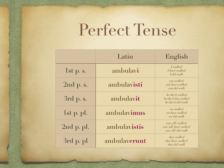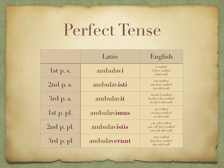The perfect tense ends in -i-isti-it, -imus-istis-erunt. Sometimes there's a consonant like a v in the stem, but not always. Remember to translate this as a completed or one-off action. So ambulavi means either 'I walked', 'I have walked', or 'I did walk'.